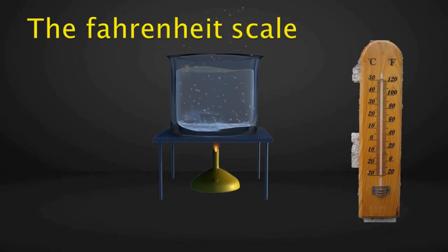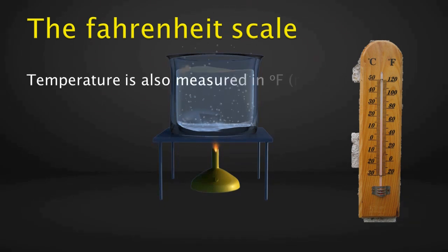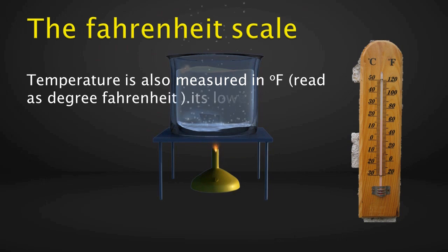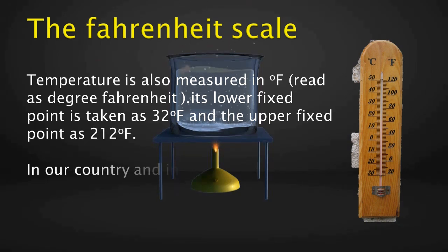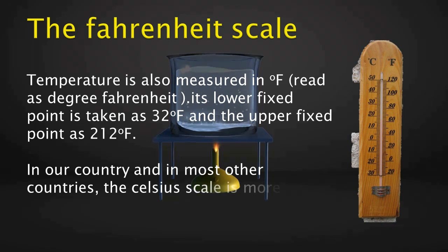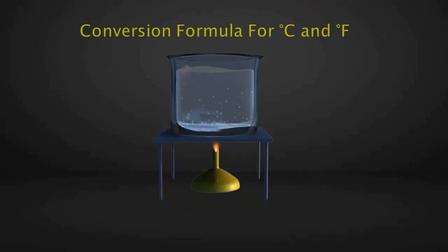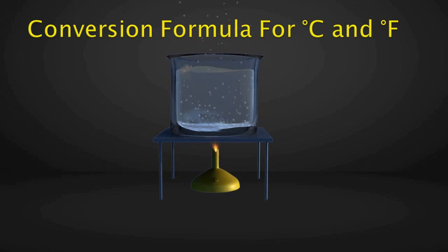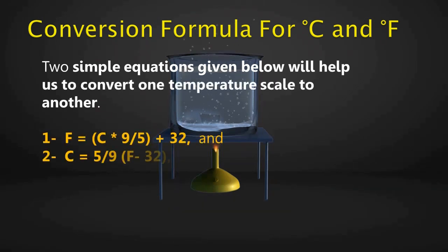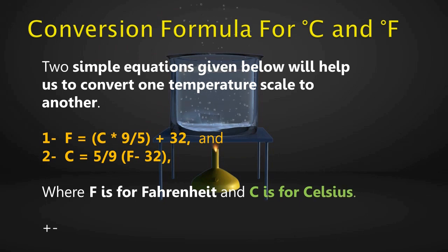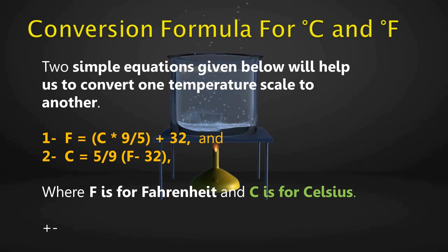The Fahrenheit scale also measures temperature, with a lower fixed point of 32 degrees Fahrenheit and an upper fixed point of 212 degrees Fahrenheit. In most countries, including ours, the Celsius scale is more commonly used. The conversion formulas are: Fahrenheit = (Celsius × 9/5) + 32, and Celsius = (5/9) × (Fahrenheit − 32), where F is Fahrenheit and C is Celsius.